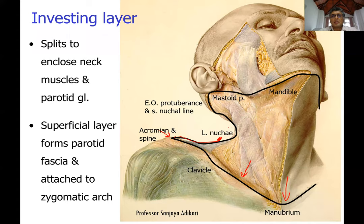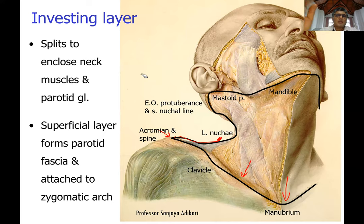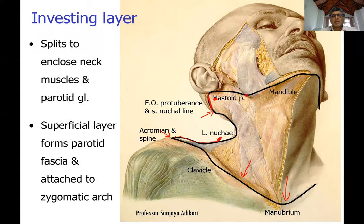The investing layer is attached to the ligamentum nuchae, then at the external occipital protuberance, along the superior nuchal line up to the back of the ear, up to the tip of the mastoid process. From there it jumps to the angle of the mandible and is attached to the lower border of the mandible, continuing to the other side.